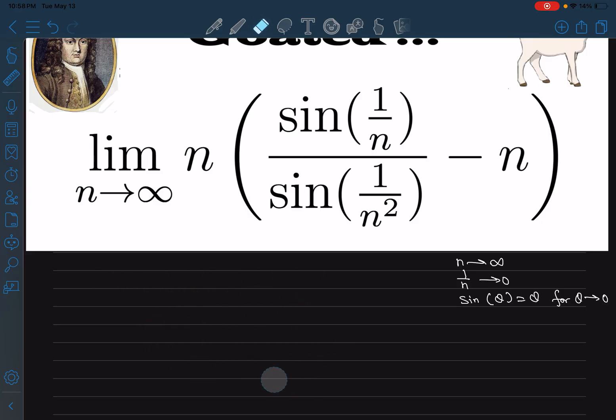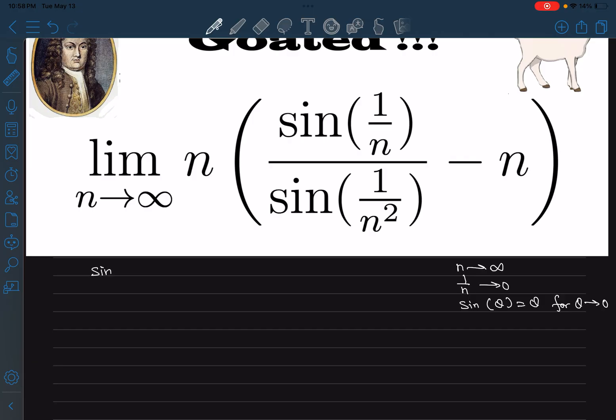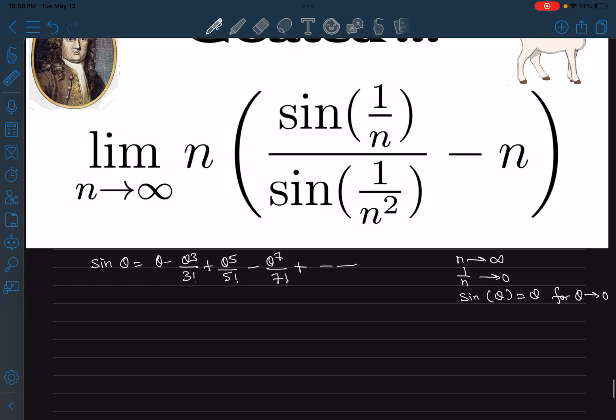The way is to use Taylor series. Let's see how that can be helpful. I guess all of you know that sine theta is theta minus theta cube by 3 factorial plus theta to the power 5 by 5 factorial minus theta to the power 7 by 7 factorial, and so on. You're gonna use this thing.